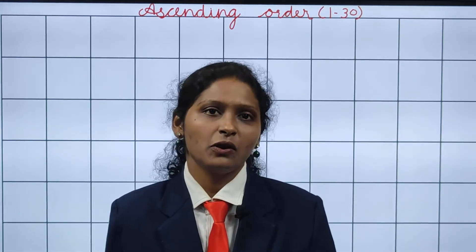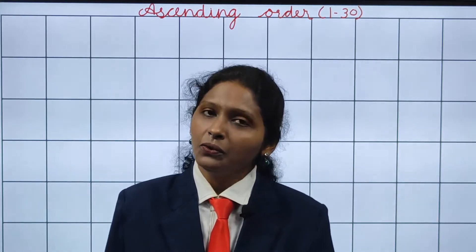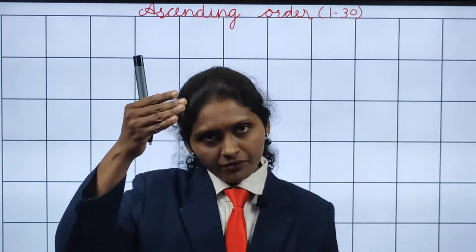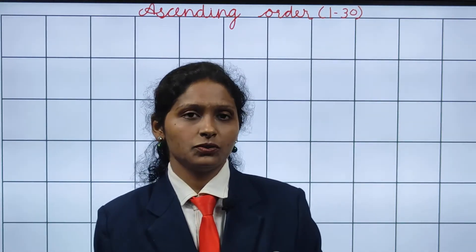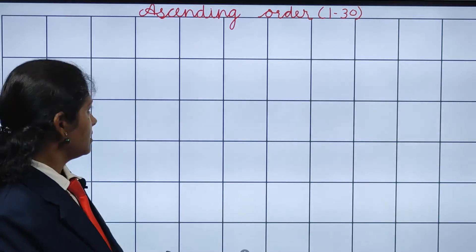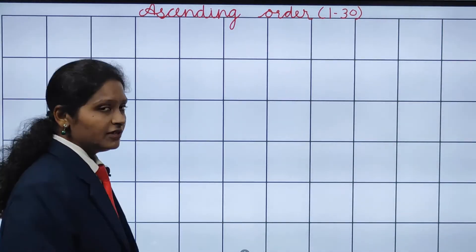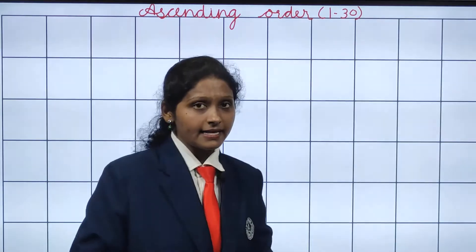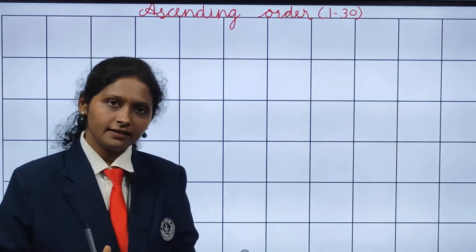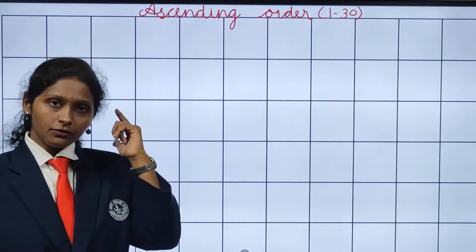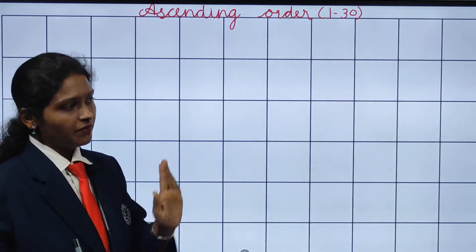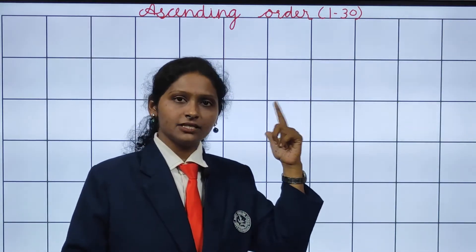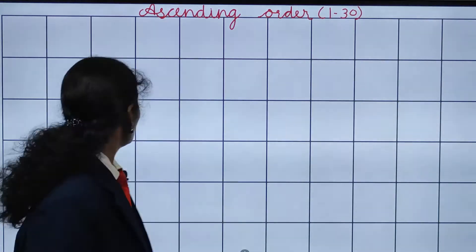It makes ascending order, ok children. So today we will write numbers 1 to 30 in ascending order — the same way you have written the numbers. So you open your square line book, be ready with your pencil, write today's date on the left side of the page, put the heading 'Ascending Order 1 to 30', and you have to think which number comes next — how we are increasing from 1 to 2, 2 to 3, 3 to 4, 4 to 5, 5 to 6, 6 to 7, 7 to 8, 8 to 9 and 9 to 10.